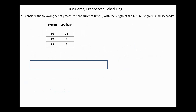Consider the following set of processes that arrive at time zero, with the length of the CPU burst given in milliseconds: Process 1 needs 14 milliseconds, Process 2 needs 8, and Process 3 needs 4. We will use the Gantt chart to calculate the average waiting time and the average turnaround time. A Gantt chart is a bar chart that illustrates the scheduling, including the start and finish time of each process.